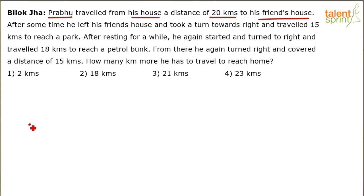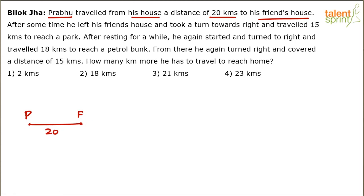Let's assume this is Prabhu's house. Prabhu traveled 20 kilometers — let's assume he traveled 20 kilometers straight to reach his friend's house. This is the friend's house. He has left his friend's house. Remember, Prabhu traveled in this direction — he traveled towards the east to reach his friend's house.